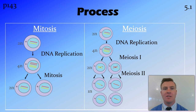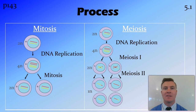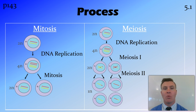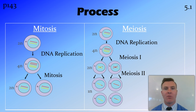With meiosis, there are actually two stages of splitting the cells. In the first stage, we go from 4N back down to 2N, or 46 chromosomes. In the second stage, we go from 2N down to 1N. So we end up with four daughter cells which have 23 chromosomes in them, which is half the normal number.